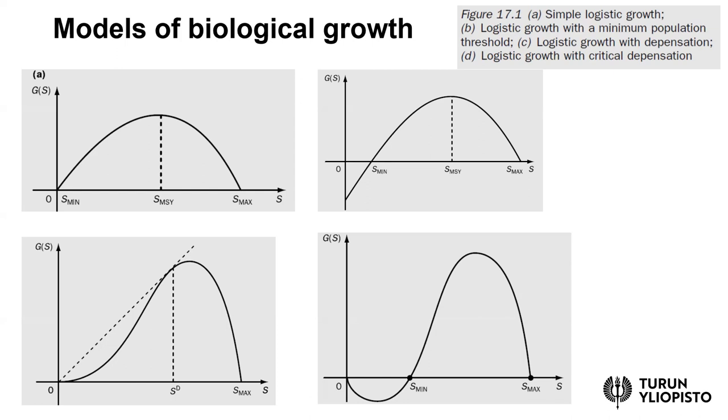What's the difference if we move to panel B, the top right panel? This similar logistic growth curve is presented. The main difference is there is some minimum level S min. Initially, at very low levels of the stock, the growth can be negative.